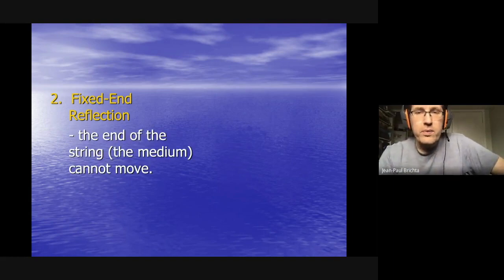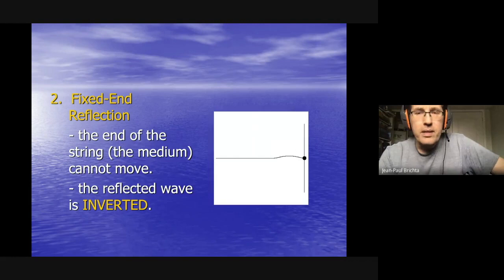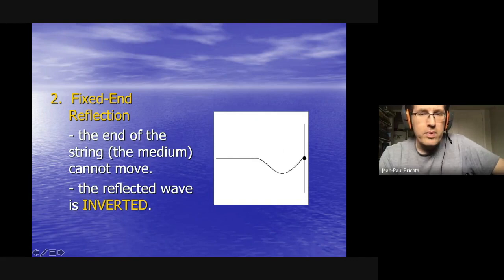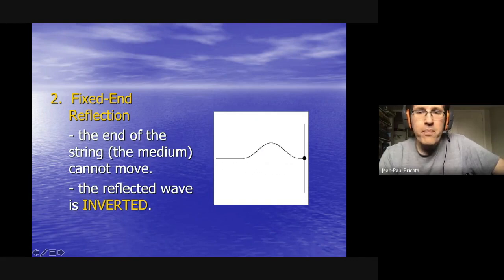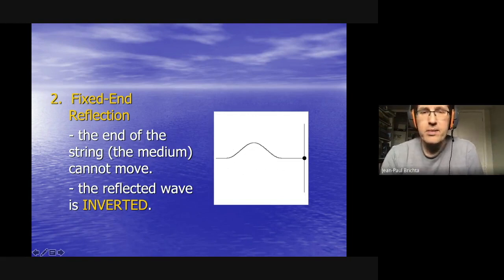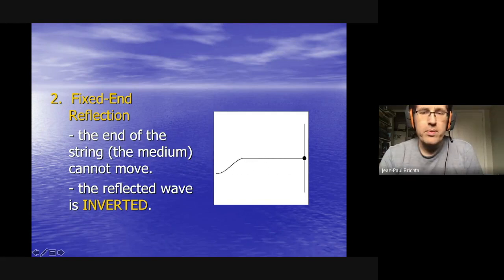The opposite type is a fixed end, where the wave is tied to the pole — just a knot, no ring. When the wave is incident and reaches the boundary, it inverts: it goes back on the other side. It started on top and reflects on the bottom — this is known as an inverted wave.